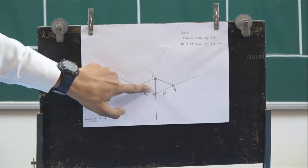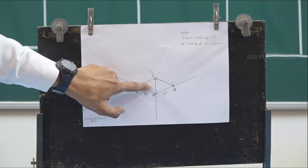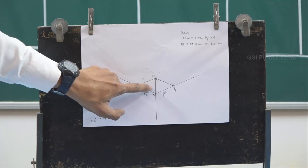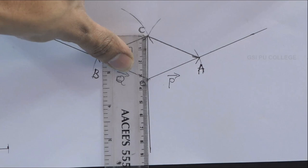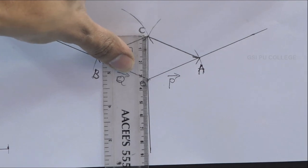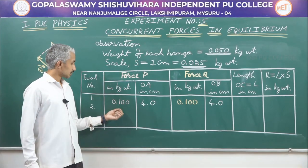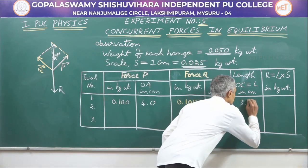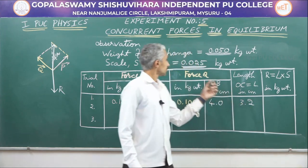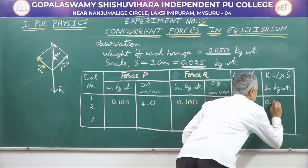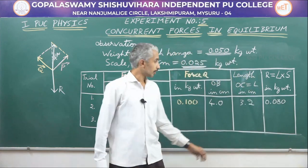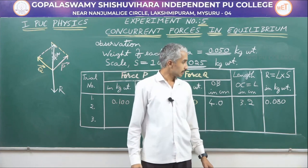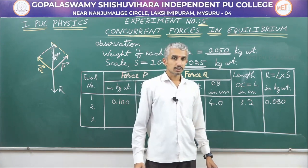This diagonal helps us find the unknown weight of the wooden block. Measuring the length of line OC, we see it is 3.2 centimeters. For the first trial, with 100 grams or 0.100 kg on both left and right, the diagonal is 3.2 centimeters. Multiplying the length by the scale gives 0.080 kg weight, or 80 grams. In this way, we have found the unknown weight of the given wooden block.